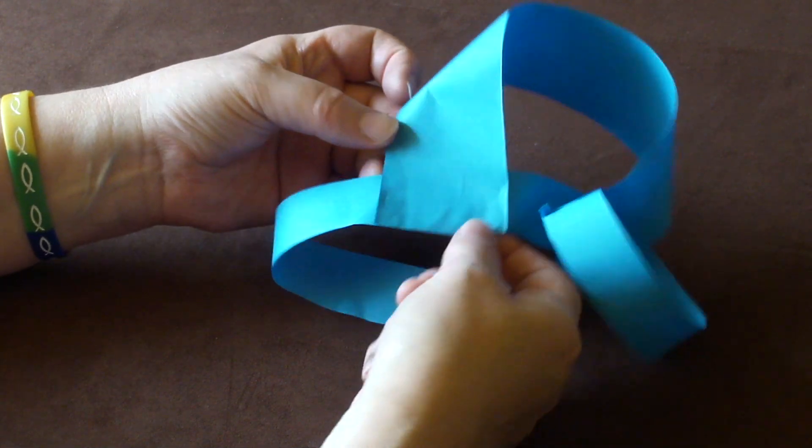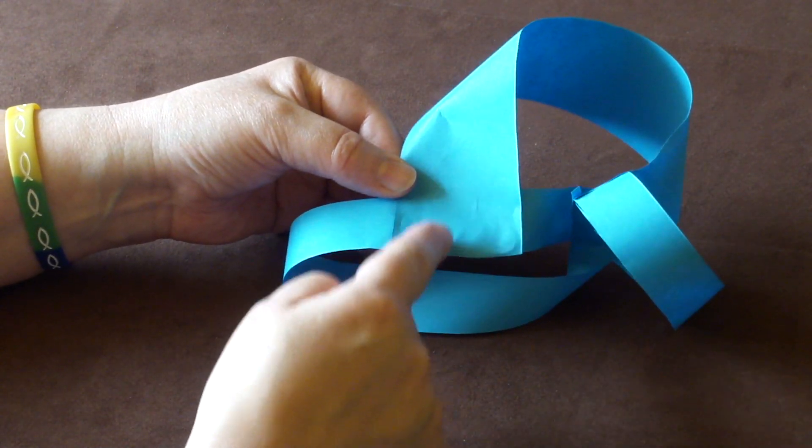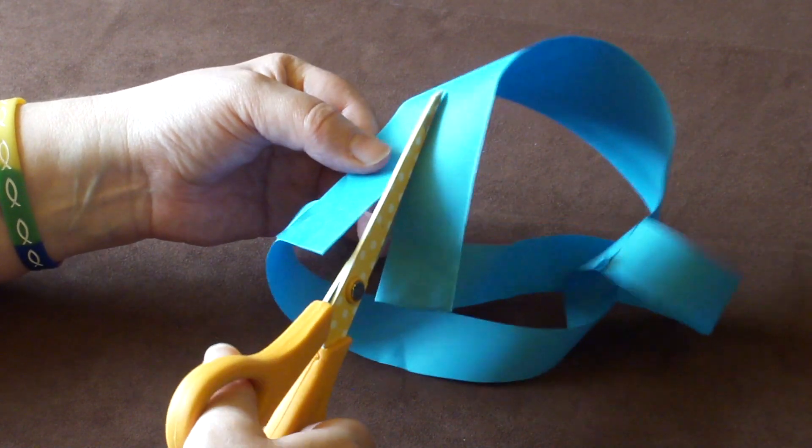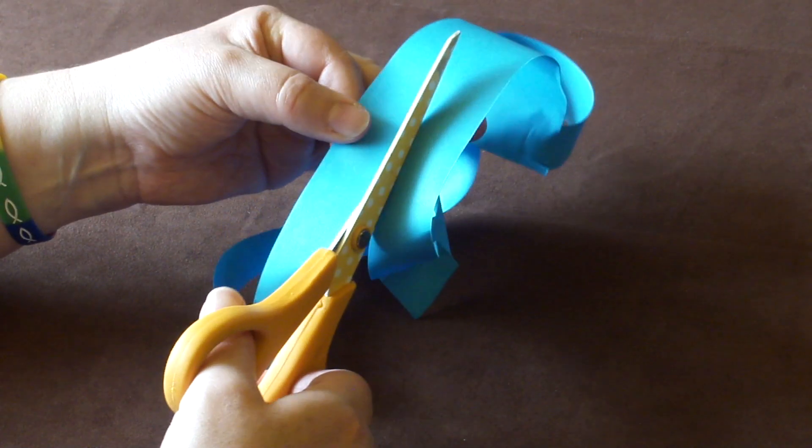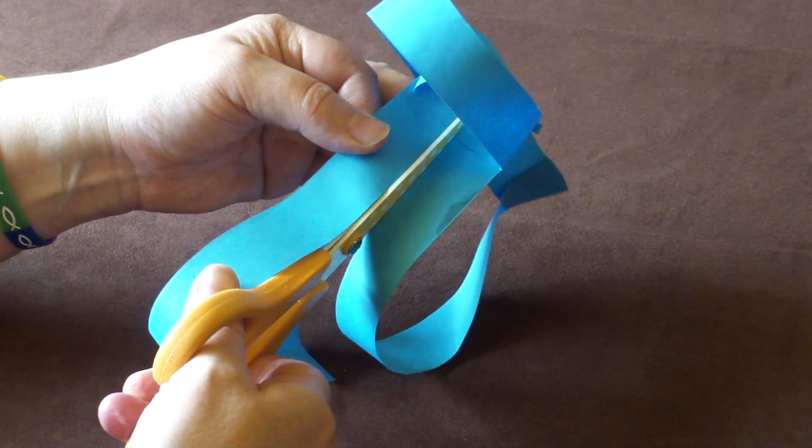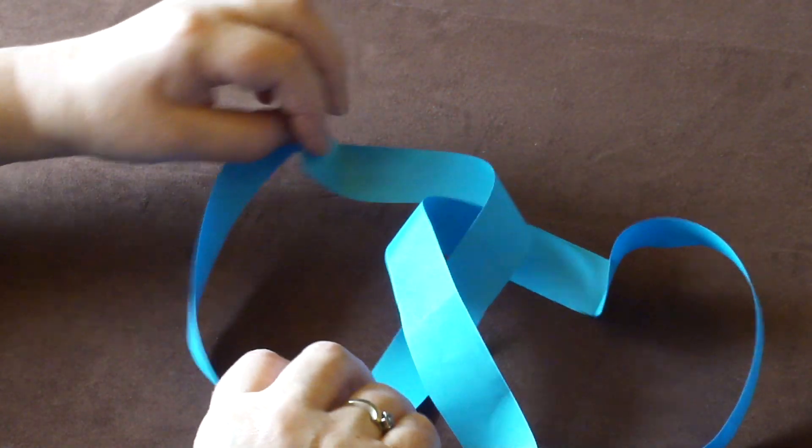Now we're going to cut the second strip. You can see it's a little easier on here, because we've got an end. We're going to cut all the way through. And then we rearrange that.